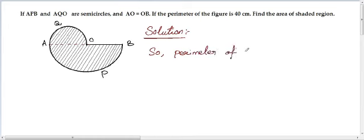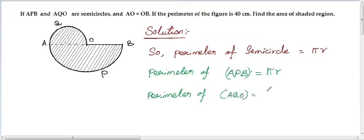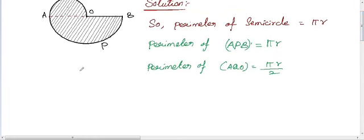We know that the perimeter of a circle is 2πR. Then the perimeter of a semicircle becomes πR. This is the formula. So the perimeter of the bigger semicircle APB is πR. And the smaller semicircle AQO is half of the bigger semicircle, so its perimeter becomes πR by 2.